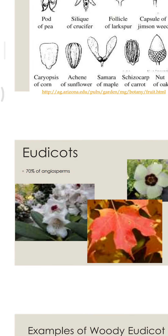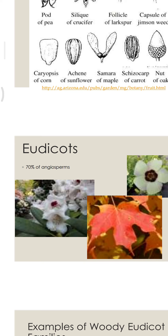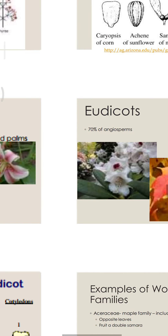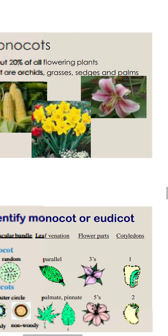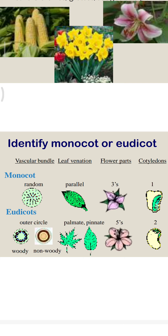Almost 70% of angiosperms constitute dicots. Now see and identify whether a plant is monocot or dicot.